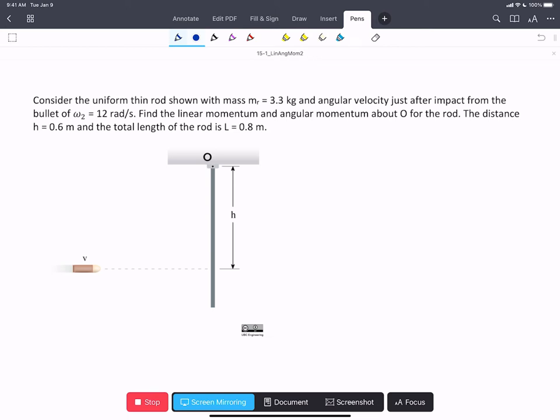In this problem, we're asked to consider a uniform thin rod that's just been impacted and given an angular velocity omega 2. We're asked to find the linear and angular momentum about O for the rod, given the distances, masses, and so on.